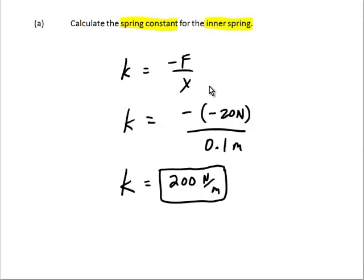which is why this is negative 20 newtons. The force is to the left compared to x, so this is negative, making it positive 200 newtons per meter. Answer to A, spring constant for the inner spring, 200 newtons per meter.